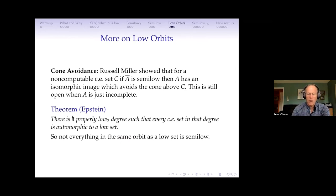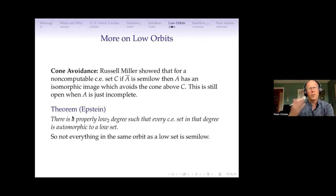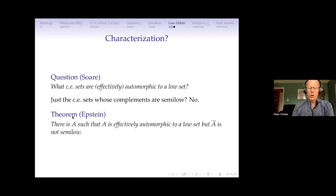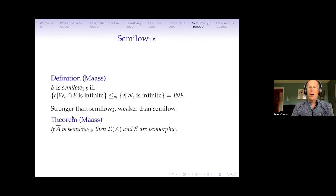Rachel Epstein proved that if you're in a properly low-2 degree, everything in that degree is isomorphic to a low set. So being properly low 2 — not low, but low 2 — is not enough to escape the lowness properties we're interested in. Those sets still have some kind of lowness properties. So at least to me, the lowness notions are a little bigger than just low sets.